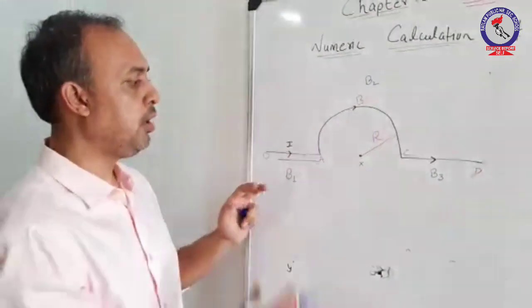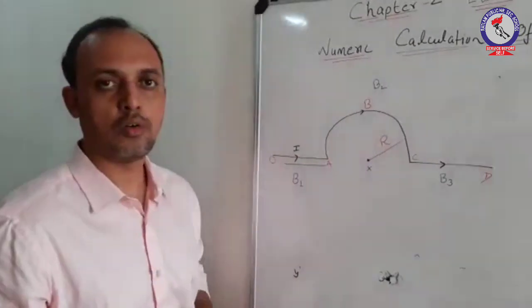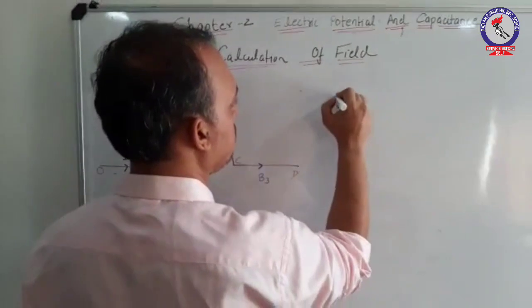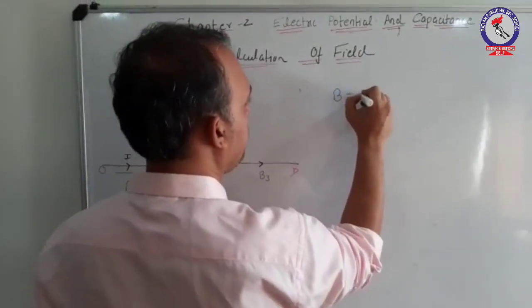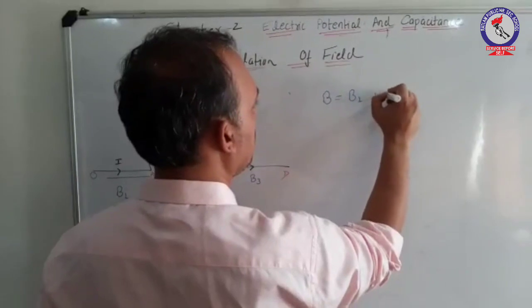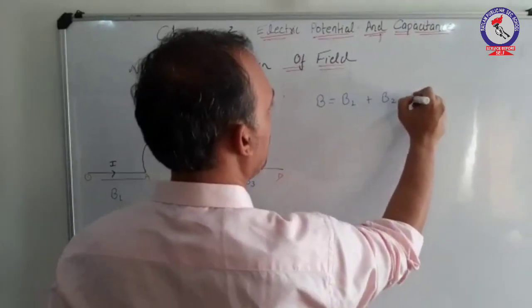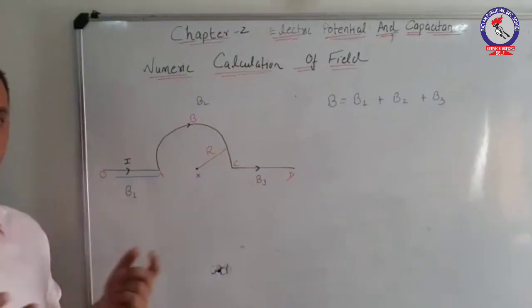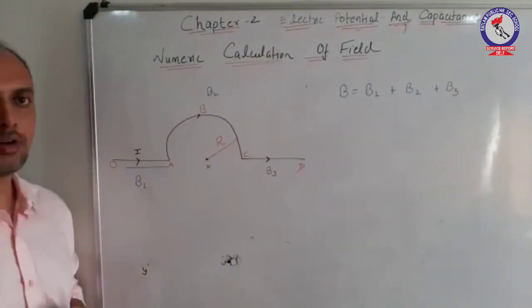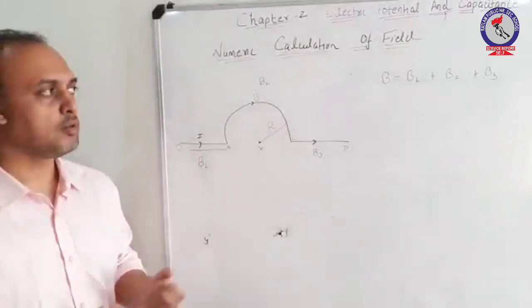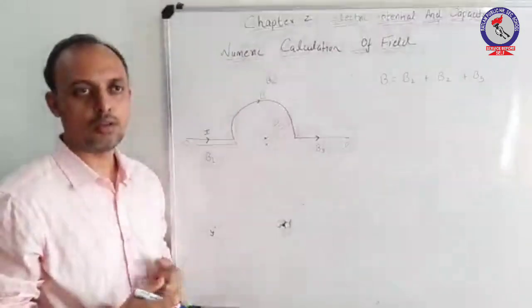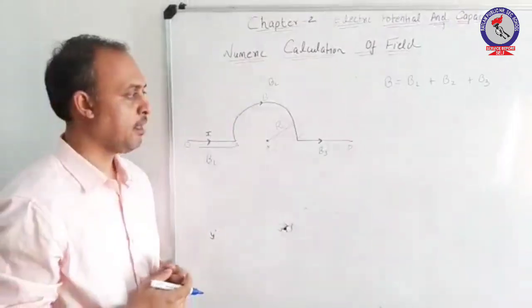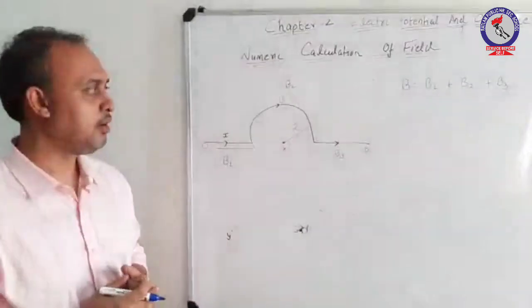We need to calculate the net field of this whole figure. Let us write a simple expression that net field can be written as summation of the field due to these three figures. We have not taken directions into consideration. Taking on the direction consideration, the sign may vary; the positive may become negative if the sign of field is opposite. Now let us observe to calculate these expressions.